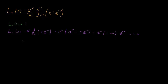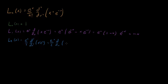For n equals 2, L sub 2 of x equals e to the x over 2 times the second derivative of x squared times e to the minus x. Taking the first derivative we get 2x times e to the minus x minus x squared times e to the minus x.